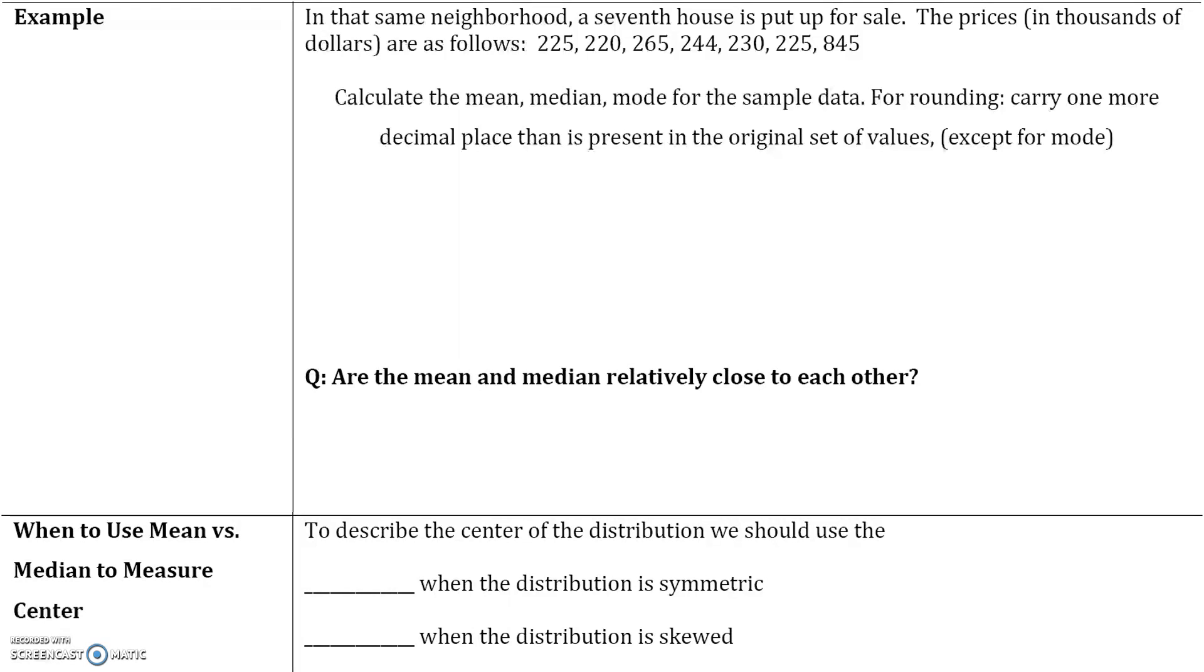Now let's say that in that same neighborhood, a seventh house is put up for sale. The prices in thousands of dollars are as follows: 225, 220, 265, 244, 230, 225, but now the seventh house is 845. Notice that this is an outlier because the $845,000 house is a significant distance away from the mean.